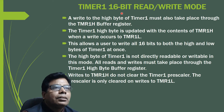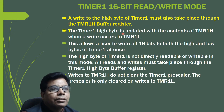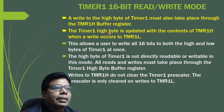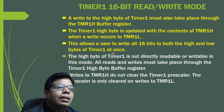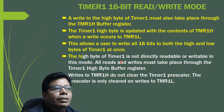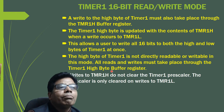For 16-bit write mode, writes to the high byte of Timer 1 must also go through the TMR1H buffer register. The Timer 1 high byte is updated with the contents of TMR1H when a write occurs to TMR1L. This allows the user to write all 16 bits to both the high and low bytes of Timer 1 at once. The high byte of Timer 1 is not directly readable or writable in this mode; all reads and writes must go through the Timer 1 high byte buffer register.